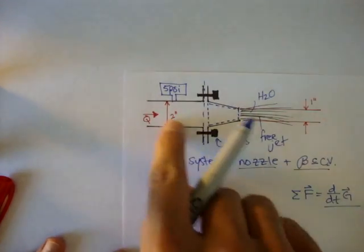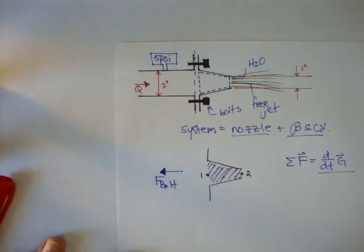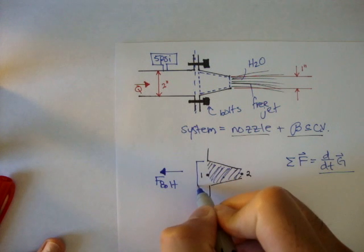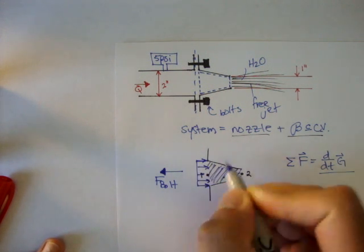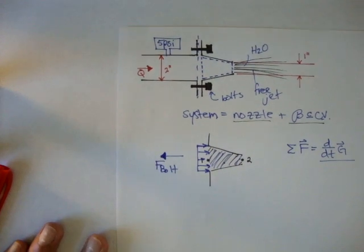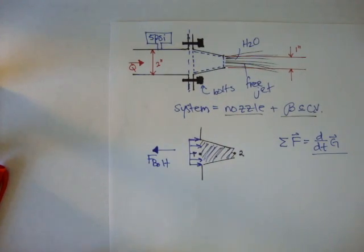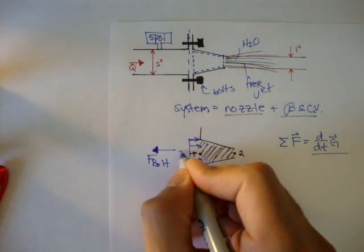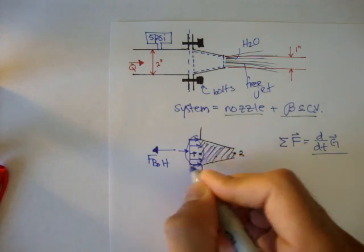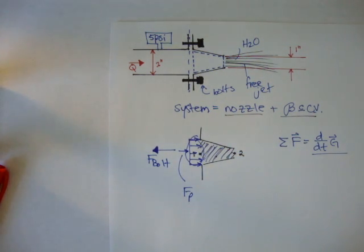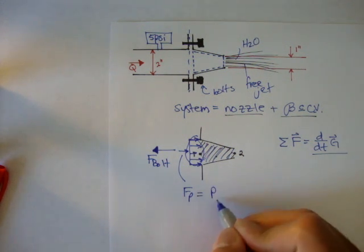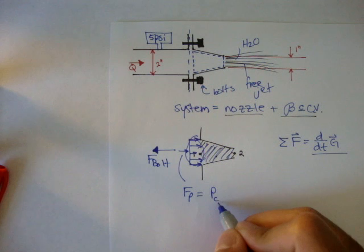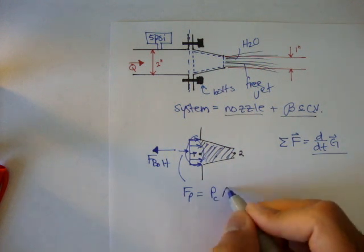And we know that this is pressurized everywhere inside. So our pressure distribution here is going to be like this. And we can call this force Fp, or the force of the pressure. And you know that the force of the pressure is equal to the actual pressure of the centroid times the area.